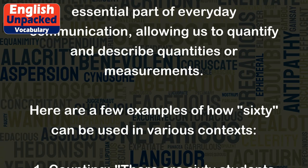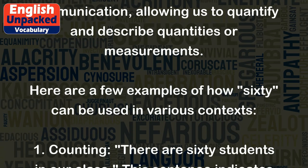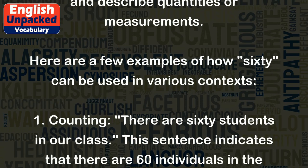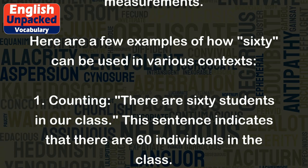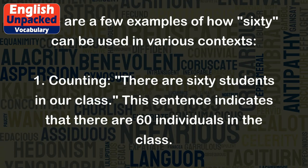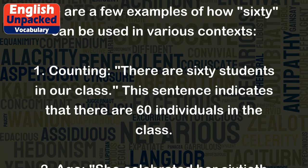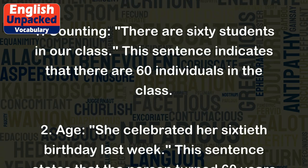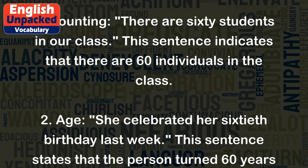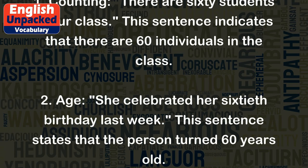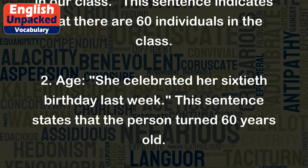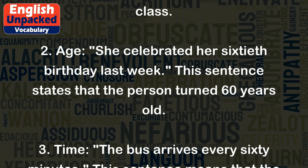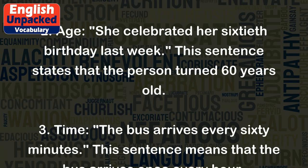Here are a few examples of how 60 can be used in various contexts. 1. There are 60 students in our class — this sentence indicates that there are 60 individuals in the class. 2. She celebrated her 60th birthday last week — this sentence states that the person turned 60 years old.